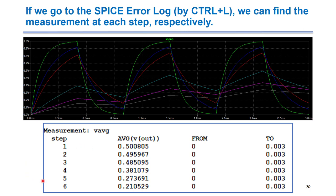We can find the measurement at each step respectively. On the second figure, this is a measurement of Vaverage. This is the name we give as a variable. At each step, we can see the average value. This is time interval from zero to three milliseconds.